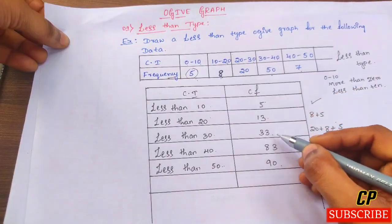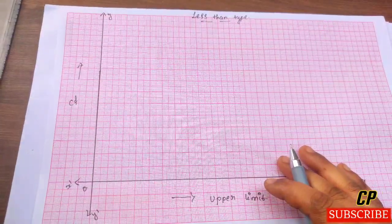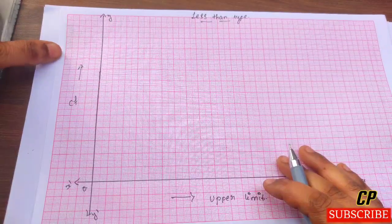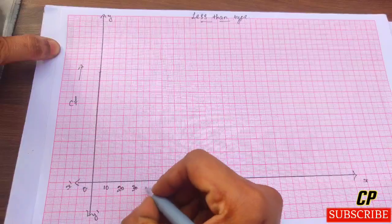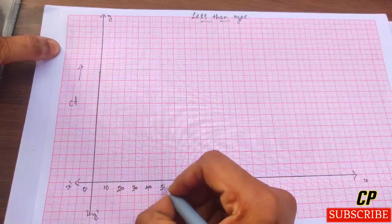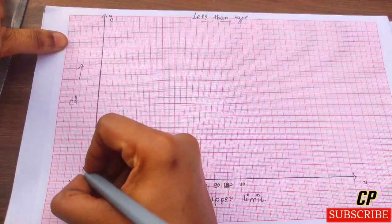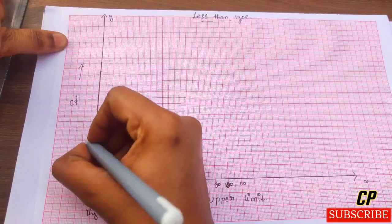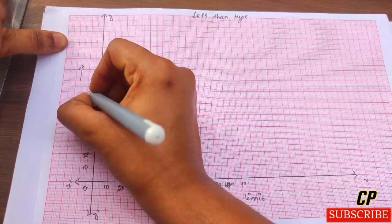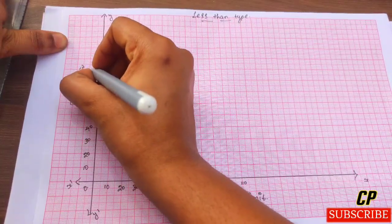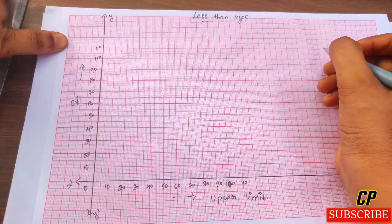On the x-axis we have values 10, 20, 30, 40, 50 with a 10-unit difference. Similarly on the y-axis we have 10, 20, 30, 40, 50, 60, 70, 80, 90 and 100.